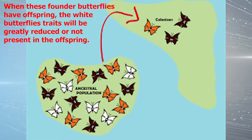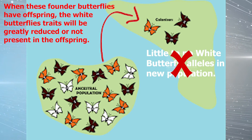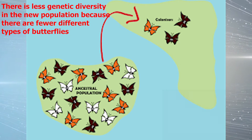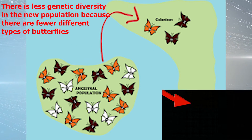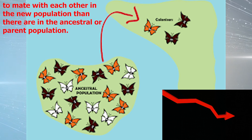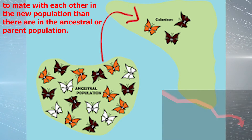So as you may have guessed, when these founder butterflies have offspring, the white butterfly traits will be greatly reduced or not present in the offspring. This also means that there will be less genetic diversity because there are fewer different types of butterflies to mate with in the new population than in the ancestral or parent butterfly population.